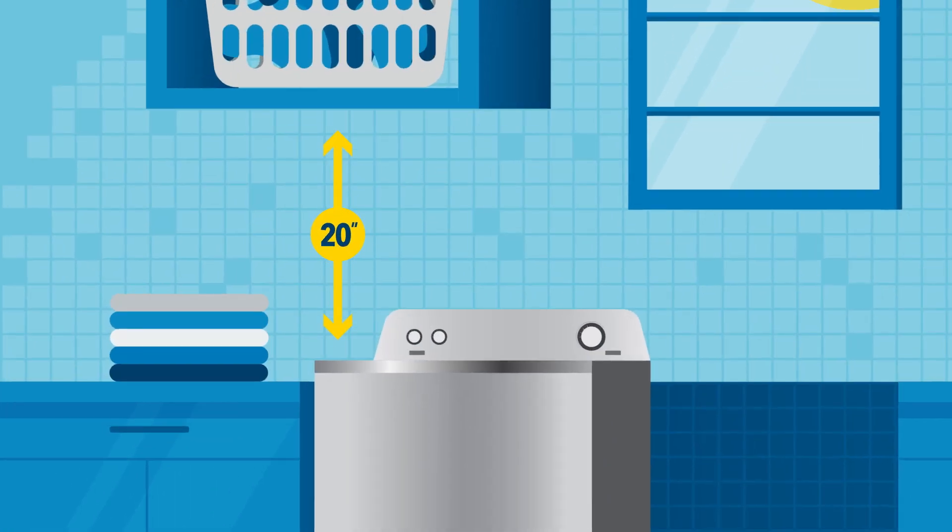For top load washers, make sure to have at least 20 inches above the machine. This is the space you'll need to allow the door to open.